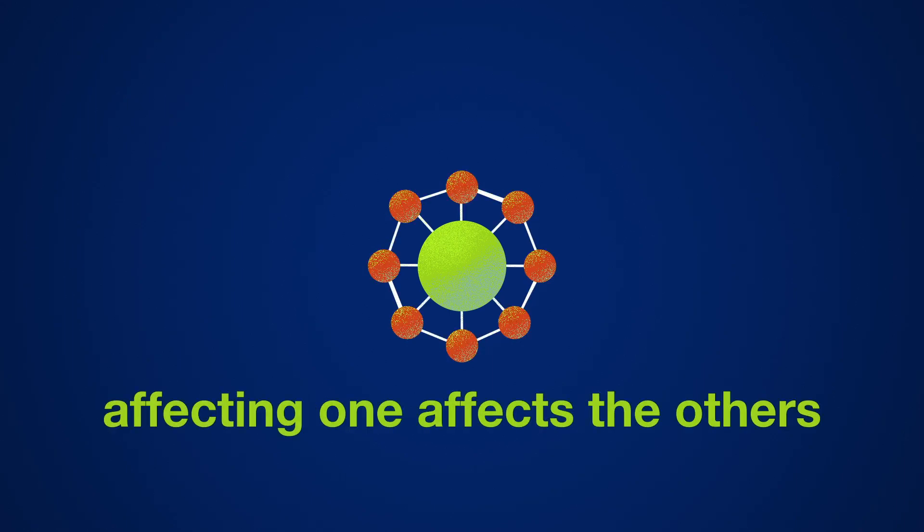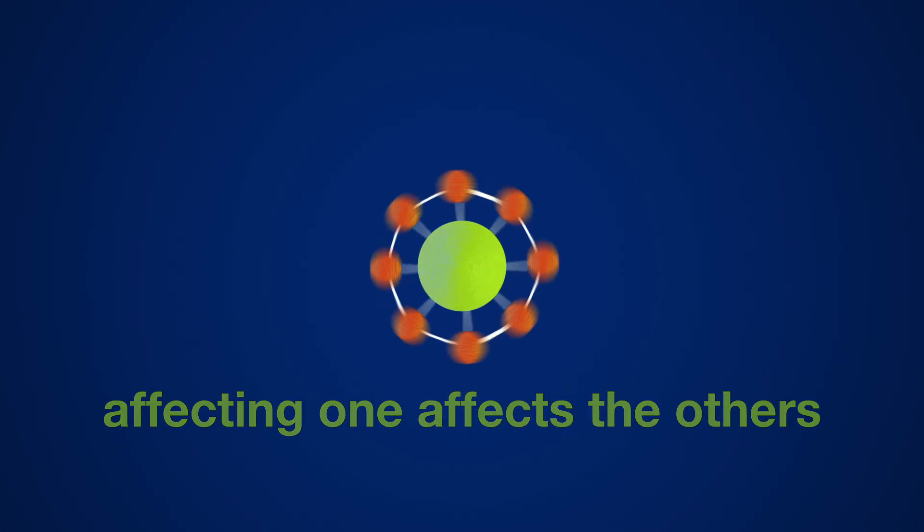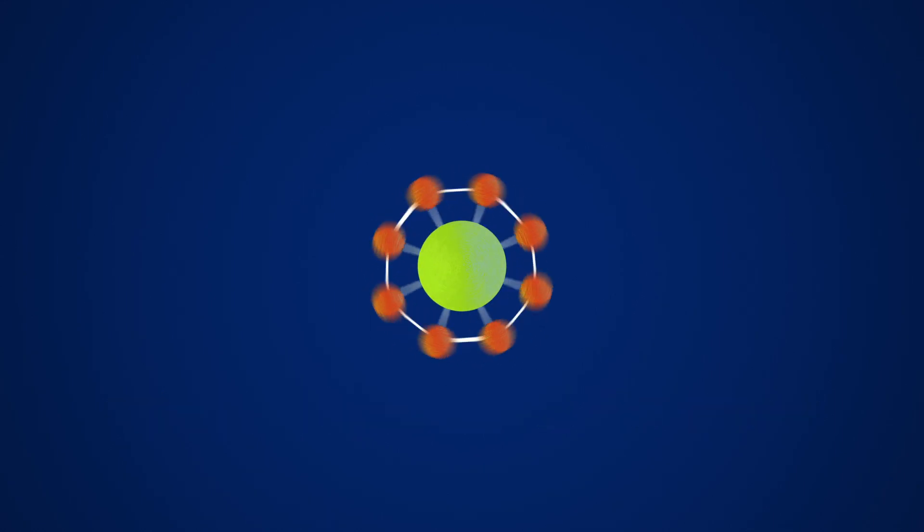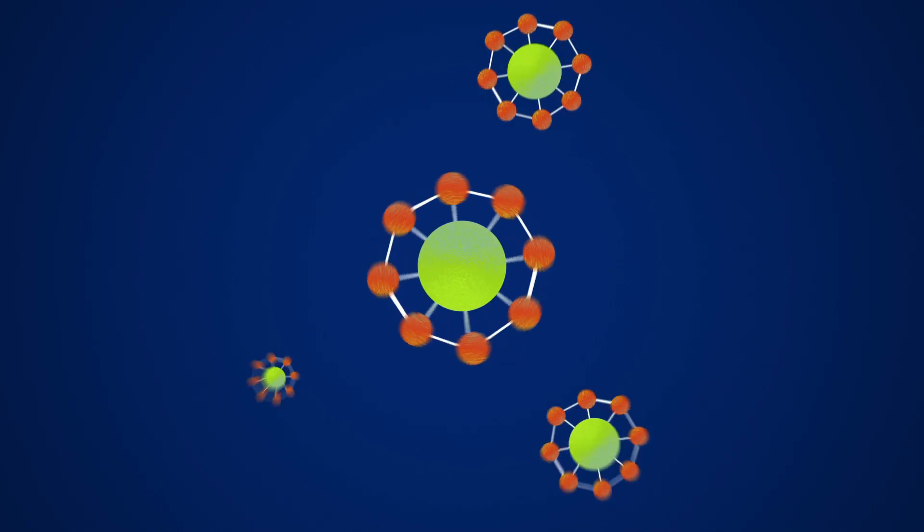At the quantum scale, parts of atoms, atoms themselves, and molecules are often entangled with each other. Disturbing one disturbs all the others it's entangled with. And when you measure, say, the spin of a particle, you alter it and those around it.